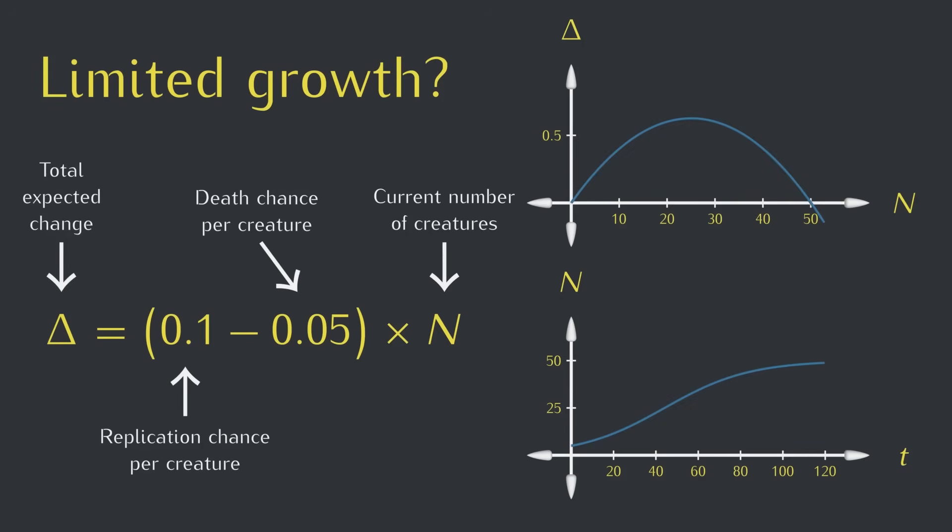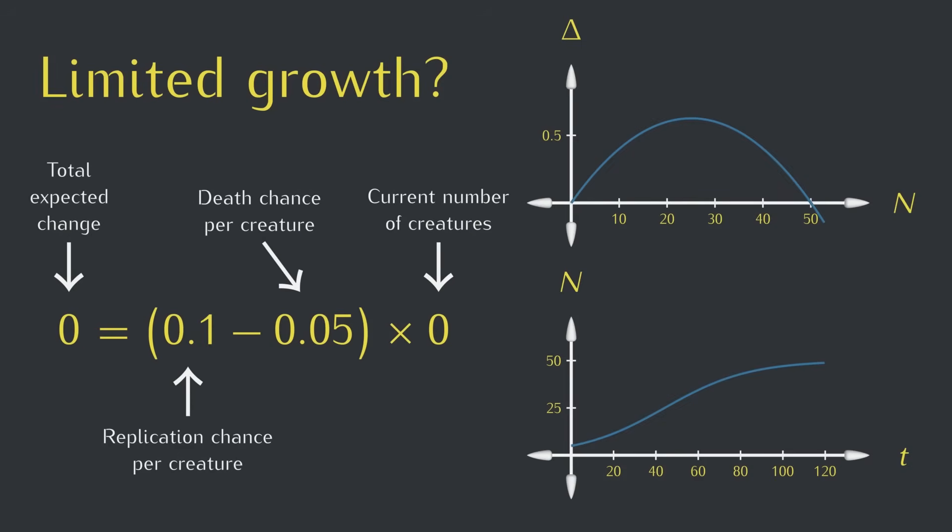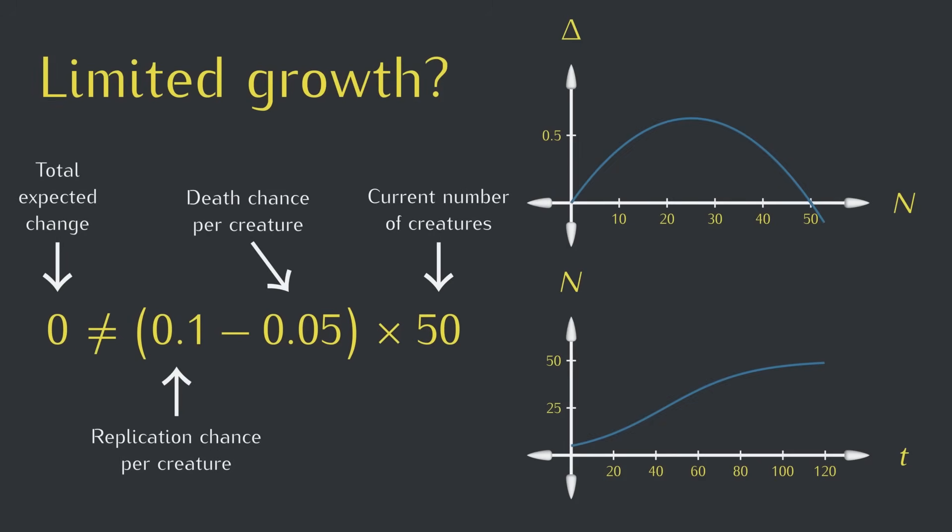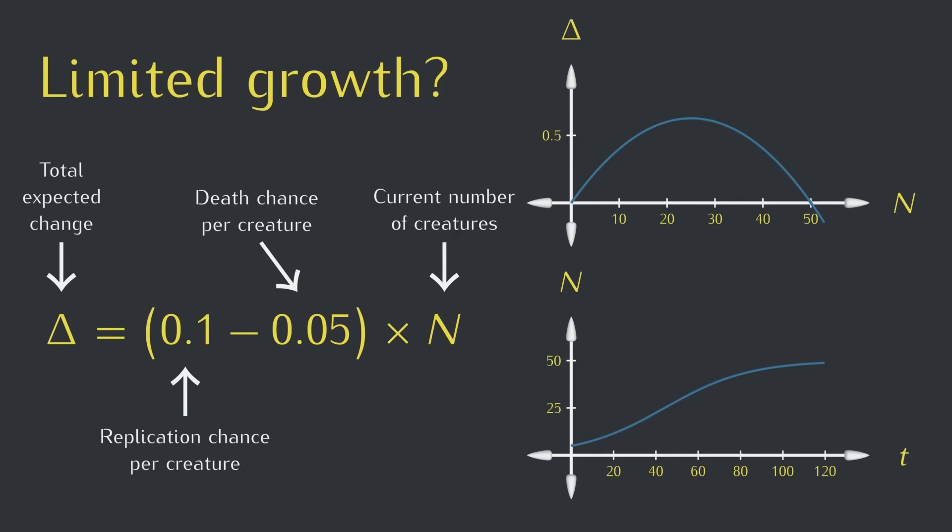This function equation already gives us delta equals 0 when n is 0, but we want delta to also be 0 when n is 50. One way to do this is to make the creatures more likely to die when there are lots of creatures around. There's only so much space and food in the environment, so when it's crowded, a creature might starve.